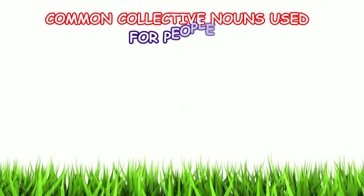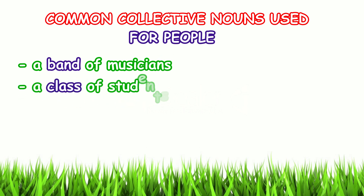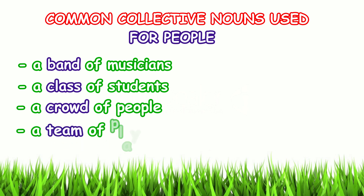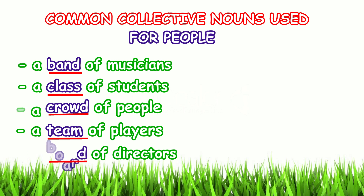Common collective nouns used for people: a band of musicians, a class of students, a crowd of people, a team of players, a board of directors. The underlined words — band, class, crowd, team, and board — are the collective nouns.